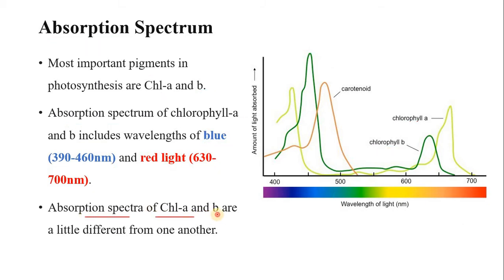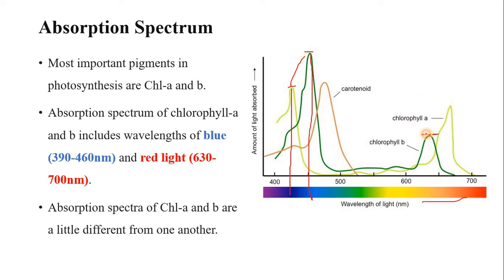The absorption spectrum of chlorophyll A and chlorophyll B are a little different from one another. Chlorophyll B has maximum absorption in the blue light range, and both chlorophyll A and chlorophyll B have different absorption spectra. If you look at the red wavelength range as well, chlorophyll B has its maximum absorption at a slightly different point than chlorophyll A. The benefit to plants is that chlorophyll A and chlorophyll B absorb slightly different wavelengths, which increases the plant's overall absorption capability.